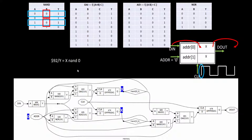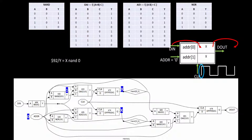This output of 1 comes and sits at the next gate's input. This is how we get the values at the output of each gate. We'll stop here and simulate the entire circuit in the next video — it won't take more than one video. We'll check what we get at DOUT and whether the behavior matches the RTL functionality we saw earlier. Thank you.